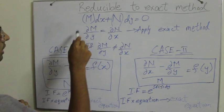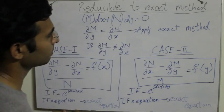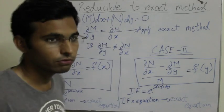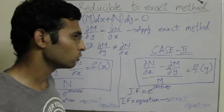Now what we do is that we use this reducible to exact method. It has 5 cases or 5 rules and I'll just be covering 2 of them for now.